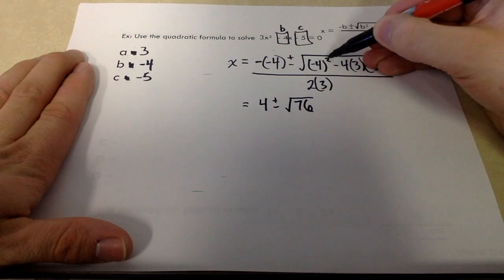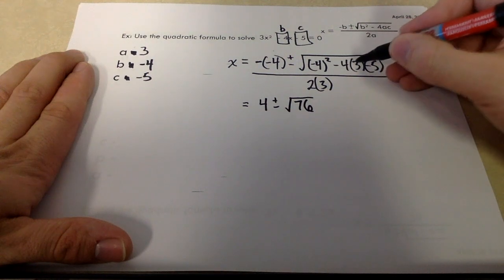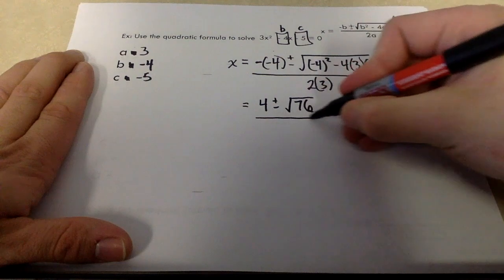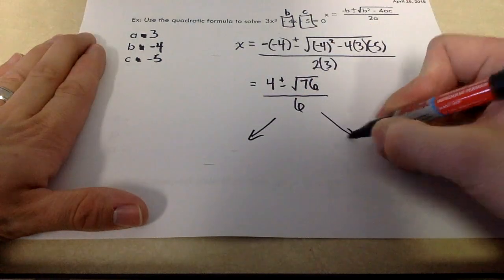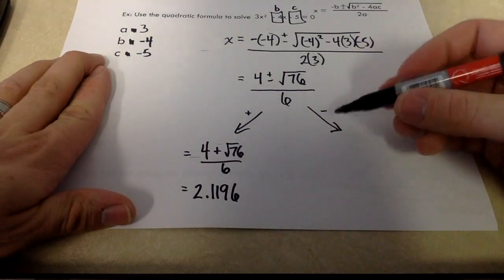So what you're going to do is do 4 squared. And you're going to subtract. And I would do all of this in brackets. I would do 4 times 3 times negative 5 and push equals. And you're going to get 76. So 76 under the root. And we're dividing by 6 here. Now, remember the same thing. We're going to do two separate solutions here. We're going to get 2.1196. So that's one of our x-intercepts.